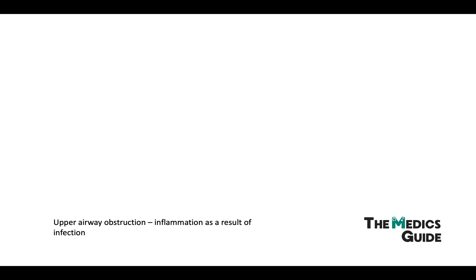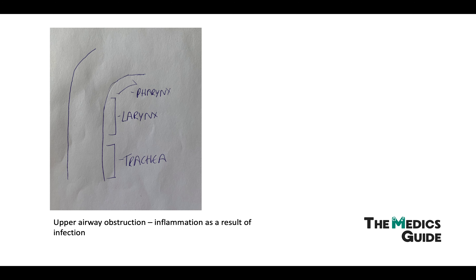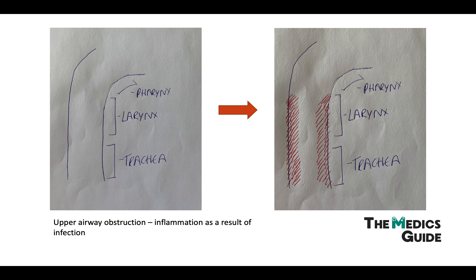In croup, the areas mostly affected are the larynx, trachea and bronchi. This picture shows how inflammation can lead to narrowing of the airway and eventually can cause some of the symptoms that will be mentioned shortly.